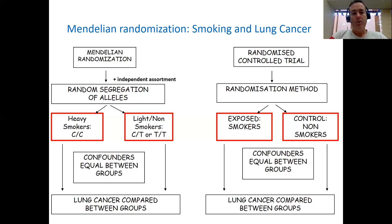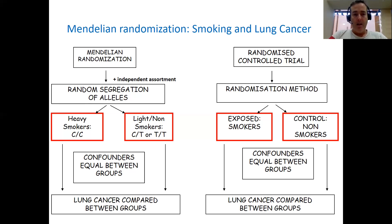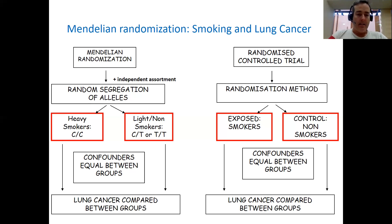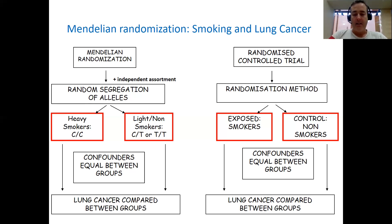We can use the random segregation and independent assortment of alleles at that locus to group individuals into two groups: heavy smokers with the CC genotype, and light or non-smokers with the CT or TT genotype. Mendel's laws of segregation and independent assortment ensure that confounders should on average be equal between the two groups. So if we compare those two groups in terms of lung cancer and lung cancer incidence is more common in the heavy-smoking group defined by their genotype than in the light or non-smoking group defined by its genotype, that's evidence that smoking causally affects lung cancer risk.